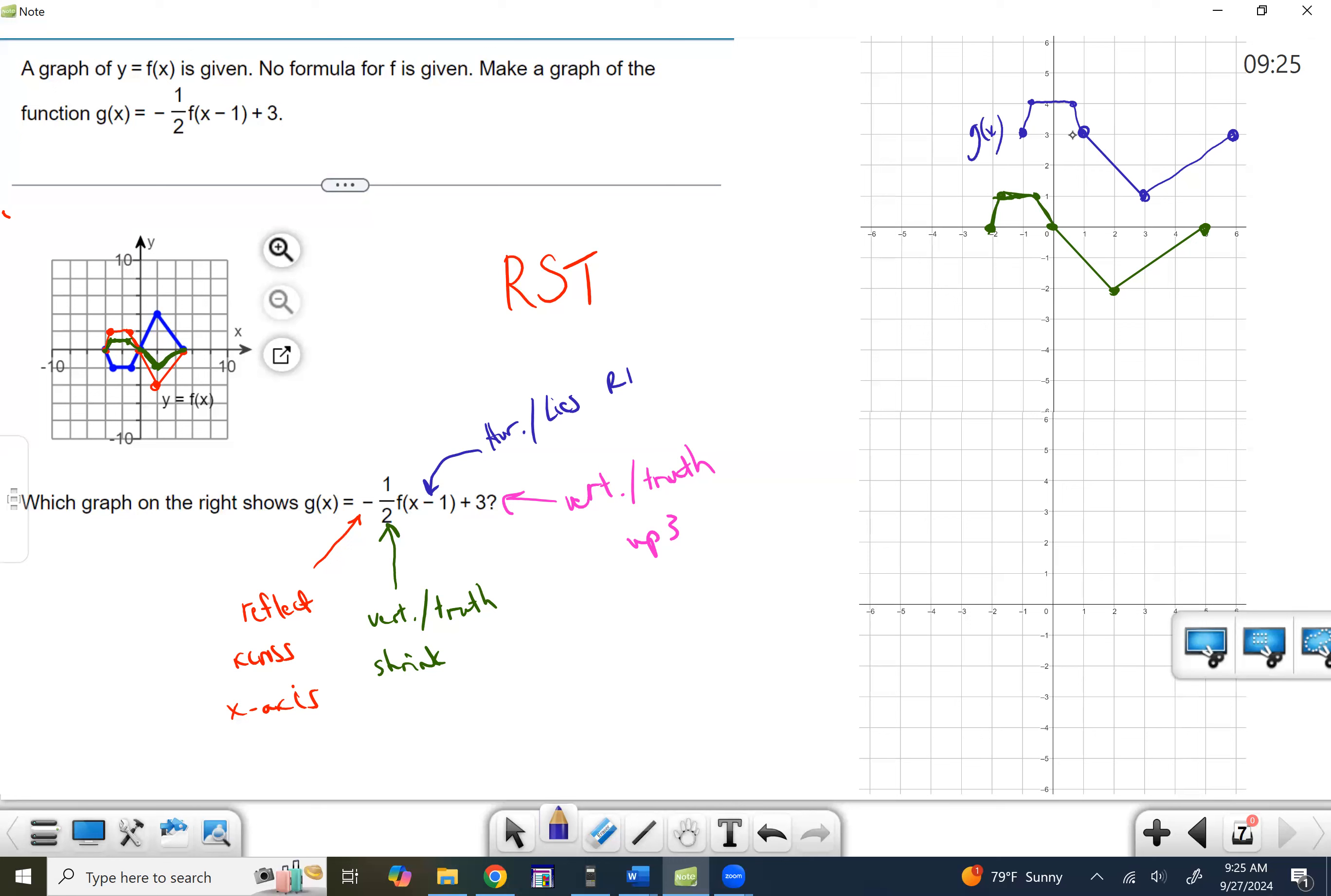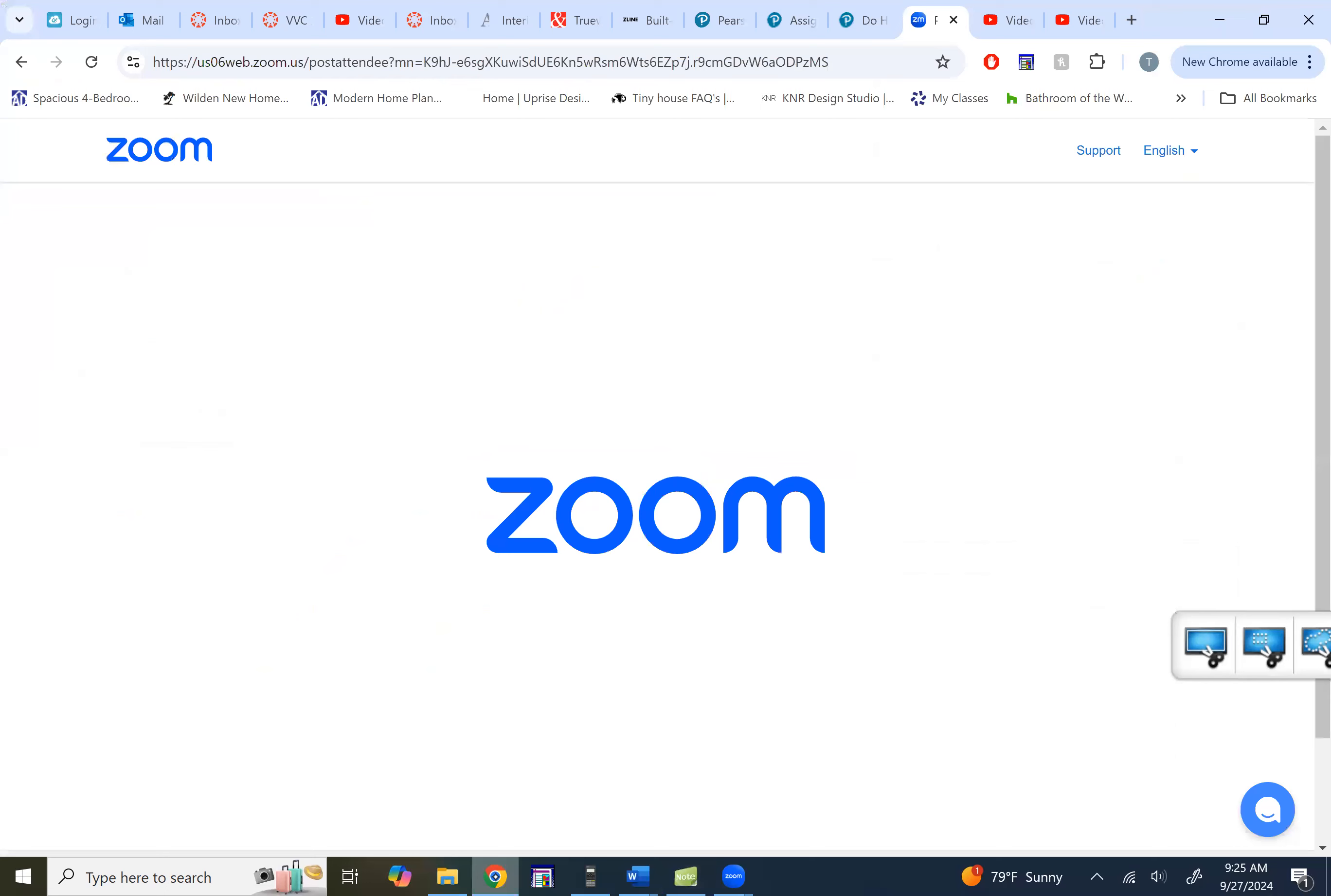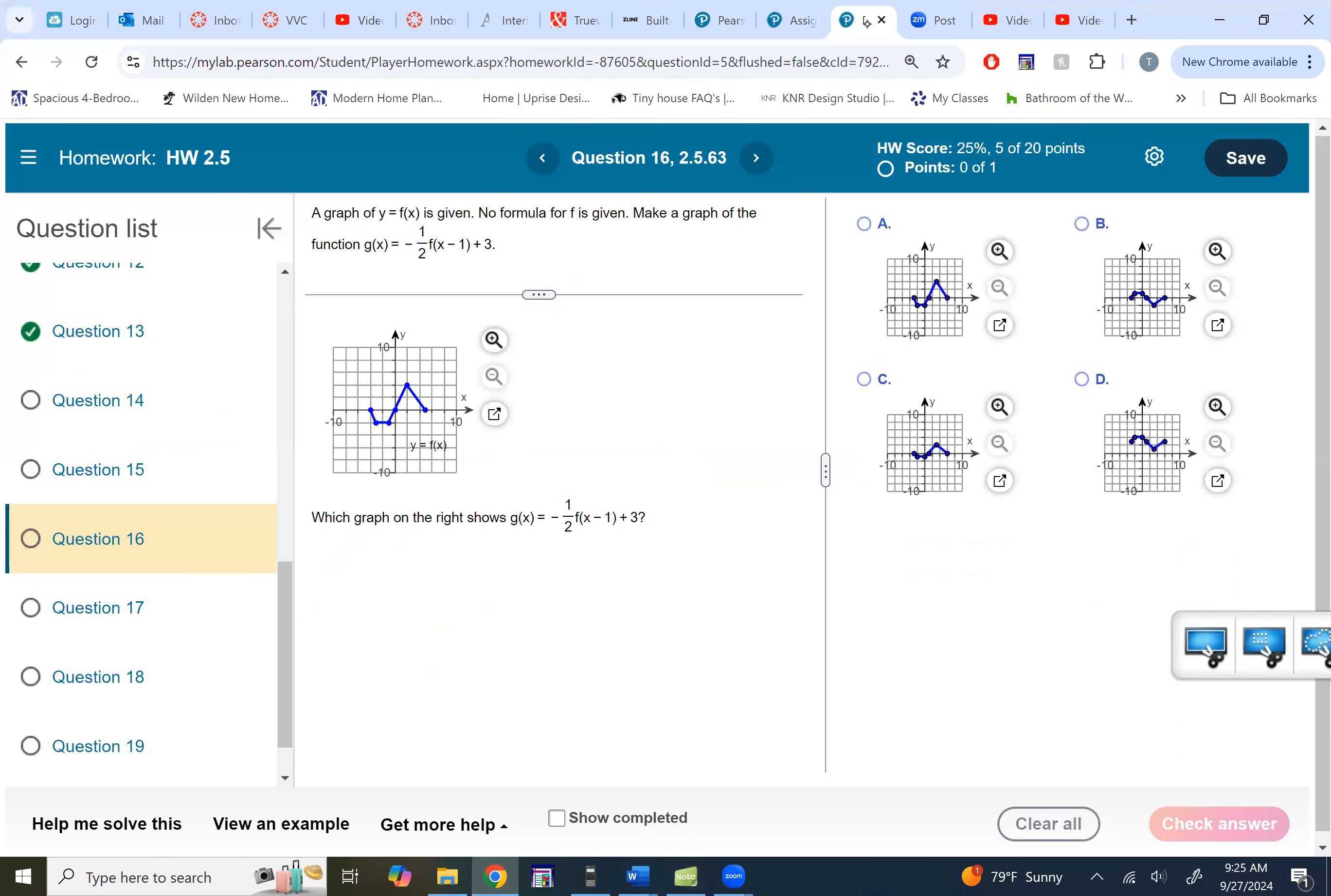All right. So we're looking for one that goes through like three, one right here. Let's go see if we can find that. These two are for sure out—they're not even the right shape. These guys are looking pretty good. I think it's got to be D because this one's too low. That dot that I pointed out to you guys, I said it has to go through three, one. Well, this one's below the x-axis, so there's no way it could be three, one. So it's got to be D on this one.